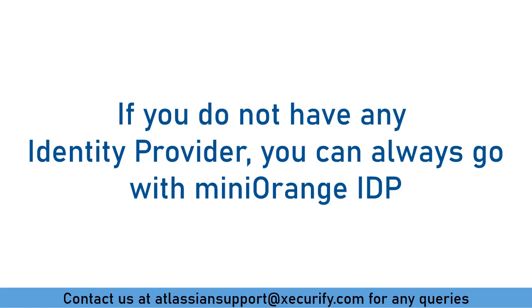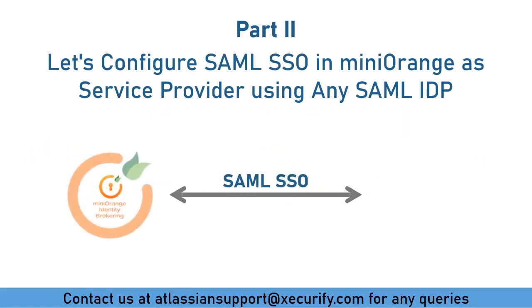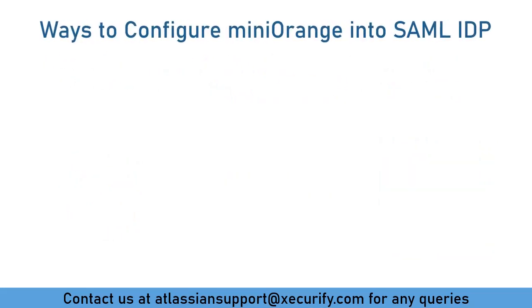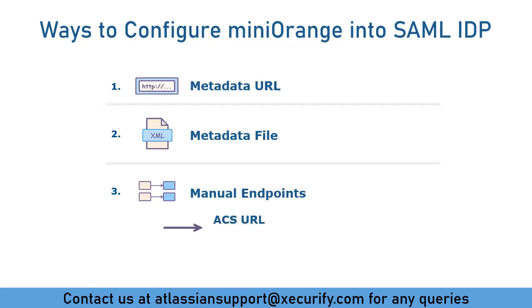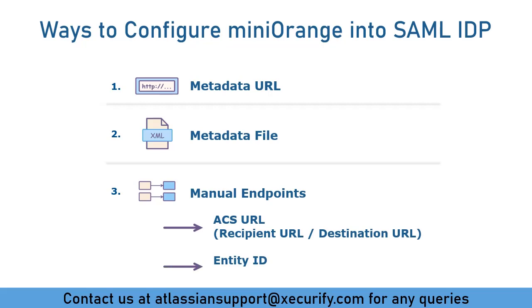If you do not have any identity provider, then you can always go with Minirange and your setup ends here. Let's configure SAML SSO in Minirange's service provider using any SAML identity provider. Here are the ways to configure Minirange into your SAML identity provider: Metadata URL specifies the URL of a service provider where metadata can be obtained. Metadata XML file is an XML document containing information necessary for configuring SAML SSO. In Manual Endpoints, you can manually configure ACS URL — which tells your identity provider where to send the SAML response after successful authentication — and SP Entity ID, which uniquely identifies your service provider.